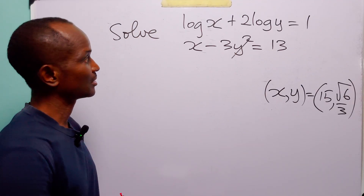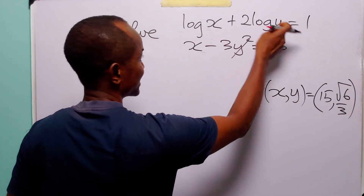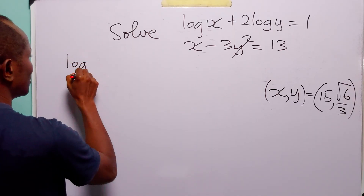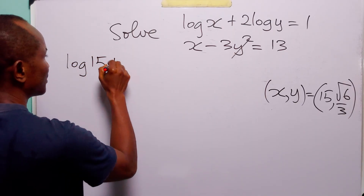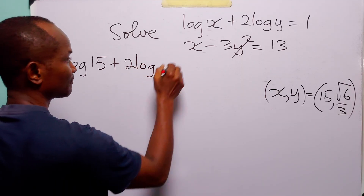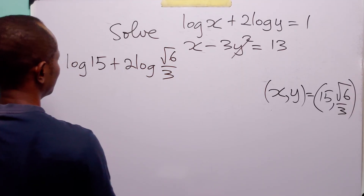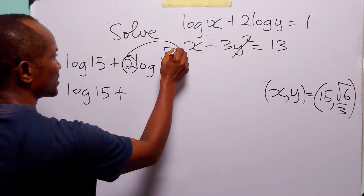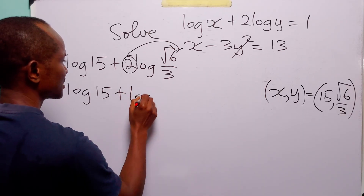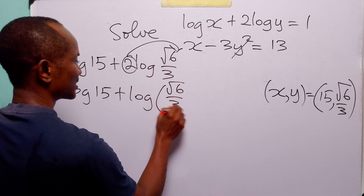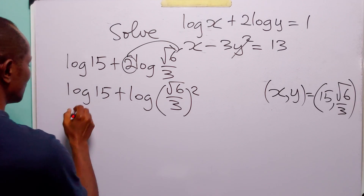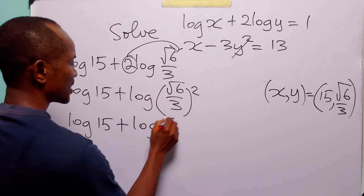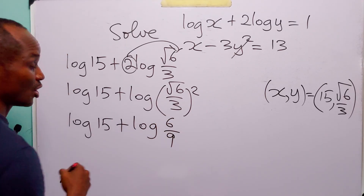Now let us do an answer check. Substituting these values for x and y into the left-hand side of the first equation, we have log 15 plus 2 times log(root 6 over 3). Here we apply the power rule, so this becomes log 15 plus log(root 6 over 3) squared.